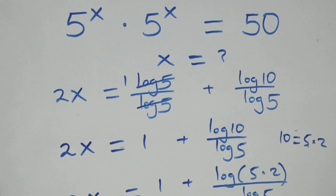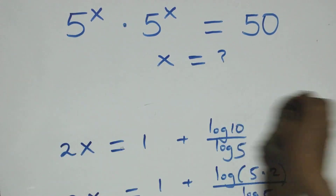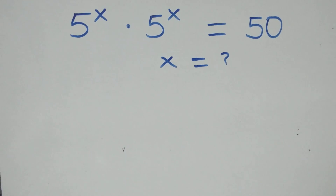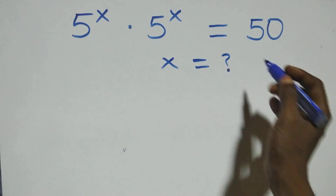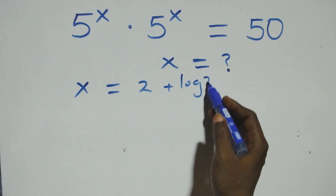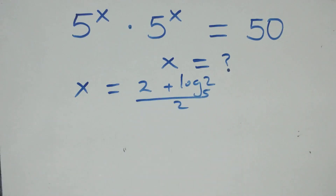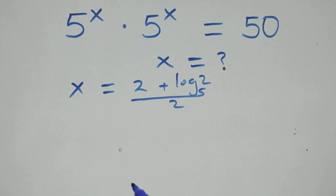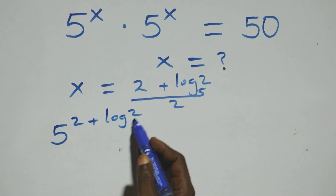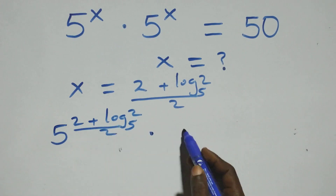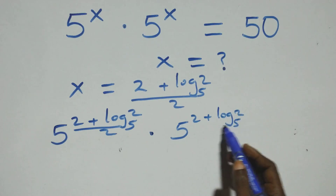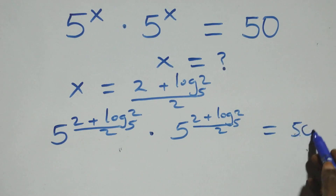Let's check if this satisfies the given problem. We substitute the value of x, which is x equals 2 plus log₅2, all over 2. What we have becomes 5 raised to power (2 plus log₅2)/2, times 5 raised to power (2 plus log₅2)/2, and we check whether this equals 50.